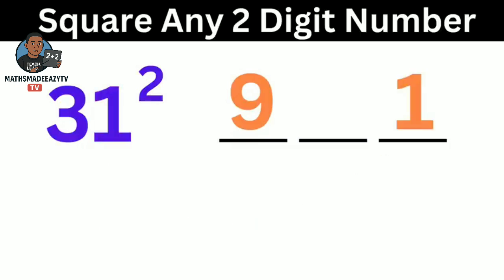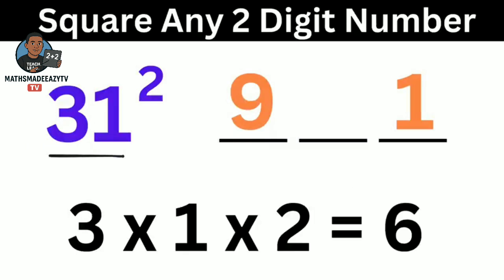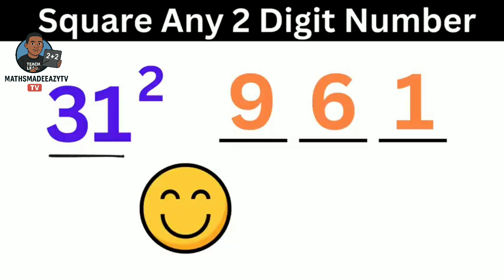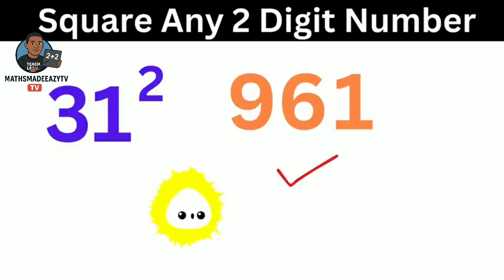Now for the middle part, we multiply the 2 digits together, which is 3 multiplied by 1, then multiply by 2. So we have 6, and we put the 6 in the middle. We are done. Now we have 9, 6, 1. That was super fast, wasn't it?